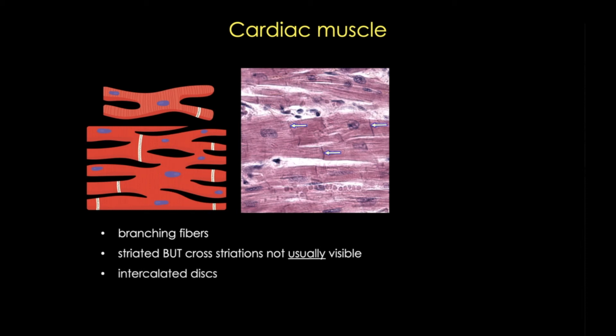These structures are located at the longitudinal ends of cardiomyocytes. They link the cells, providing cell-to-cell coupling that's critical in propagation of the action potential, and they contain gap junctions, desmosomes, and adherence junctions. Now in contrast to skeletal muscle, cardiac muscle has only one nucleus per myocyte, and these are centrally located.